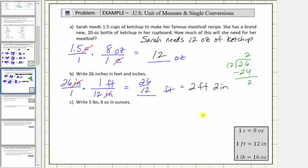And now for the last example, we're asked to write 5 pounds, 6 ounces in ounces. To do this, we'll first convert 5 pounds to ounces, and then add those ounces to 6 ounces to determine the total number of ounces.